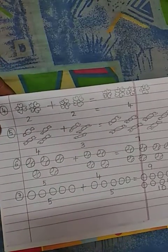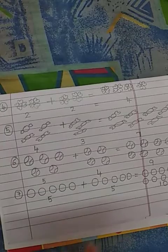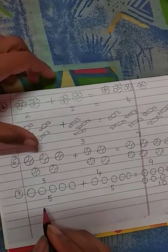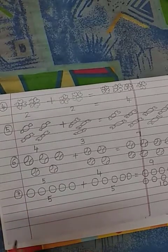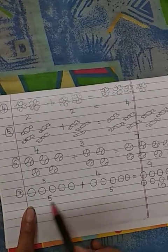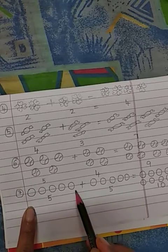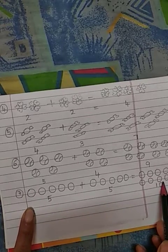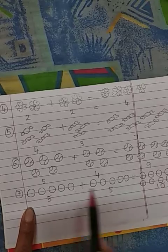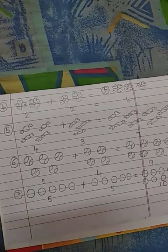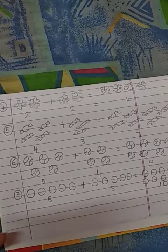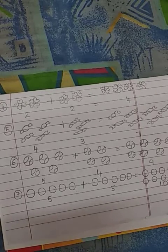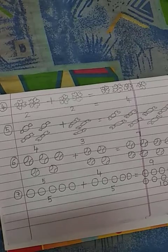Like that, we will go for another method. Another method is about we will draw, we will add and we will write. Here already images are there. So we are counting the image and writing the answer. But now what I am saying is we alone will draw, we alone will add and we alone will write the answer, which I will be explaining you in our next video.